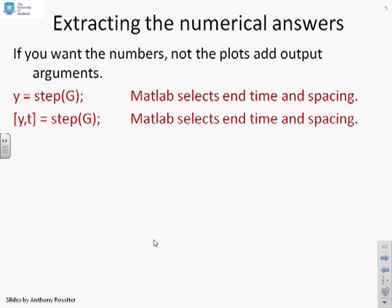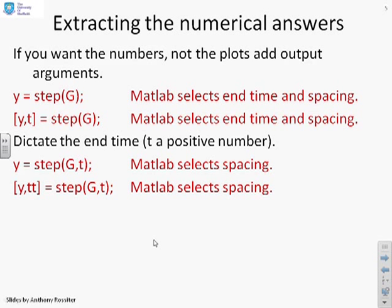What happens then if I want to get some numerical numbers out? So I'm not interested in the plots, not yet anyway. But I actually want to calculate the values. Well, there's different options. So for example, I can put Y equals step(G). And it will just calculate the Y at the end time and with the spacing that it thinks best. Or I can put square brackets [Y,T] equals step(G). And it will calculate the outputs and the corresponding times at which it's calculated those outputs. And often you want both pieces of data. So usually the second line is better. But the key thing is here, because I've only got brackets G as an input, MATLAB will select the end time and the spacing. What happens if I want to dictate the end time?